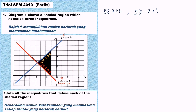For the last straight line, we need to find the linear equation first before writing the inequality. This is a vertical line passing through the x-axis at negative 1, so the equation is x equals negative 1. Looking at the shaded region, it is on the left-hand side, so we write x less than negative 1. We cannot write 'or equal to' because the line is a dotted line.